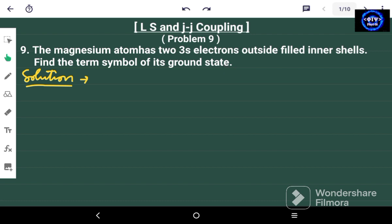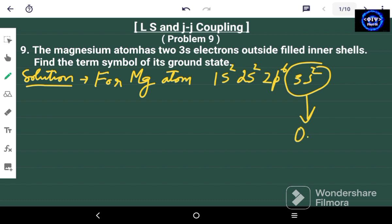So for magnesium atom the electronic configuration is 1s2, 2s2, 2p6 and 3s2. These two 3s electrons are optical electrons.